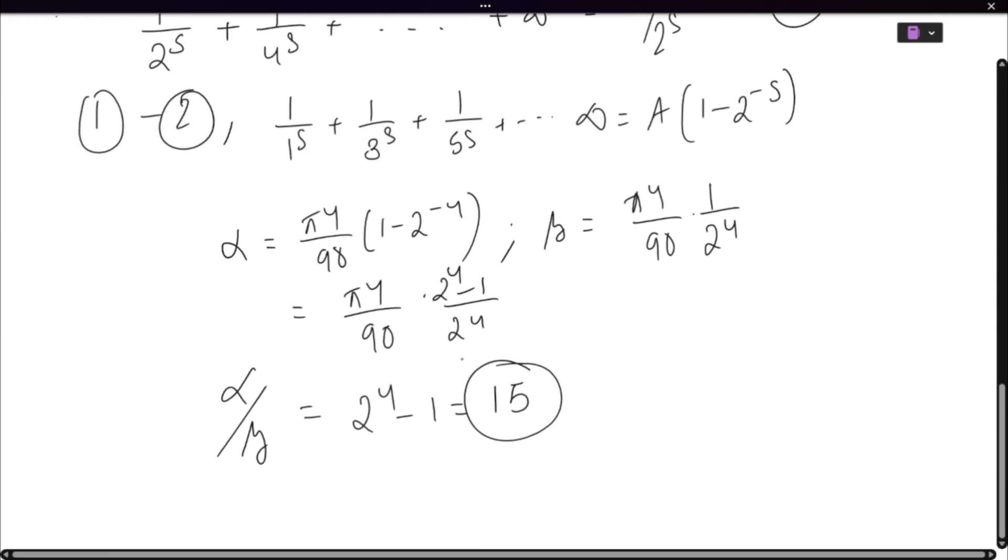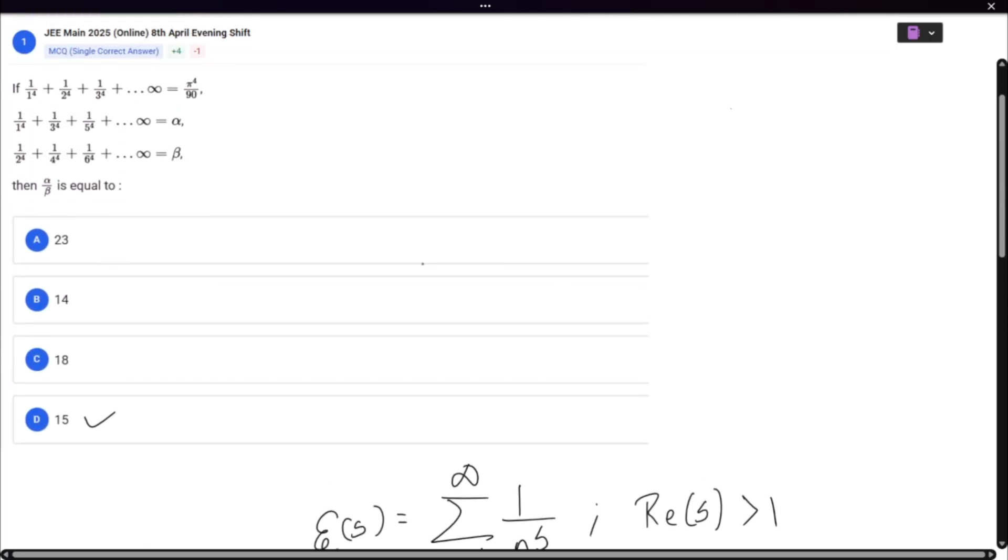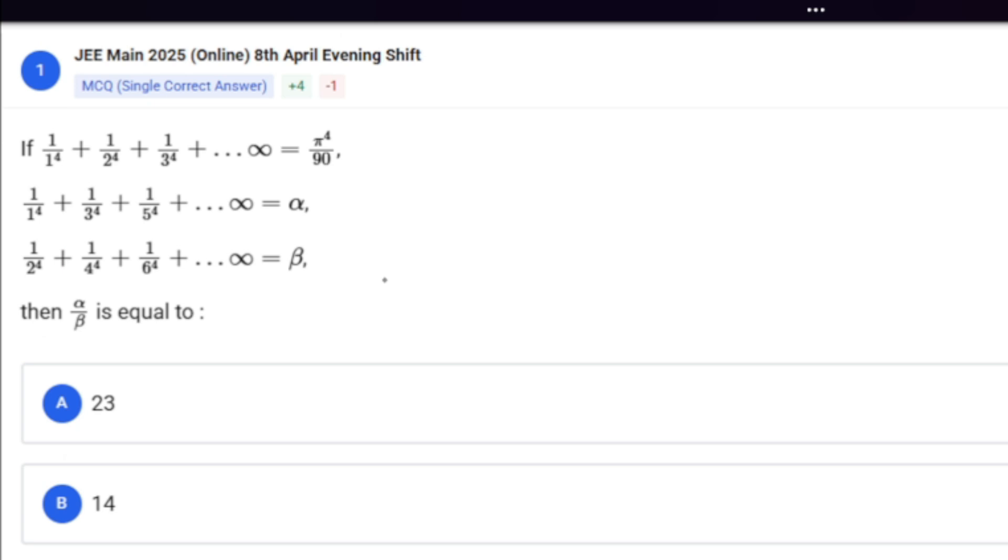So as you can see, we did not even need pi to the power 4 by 90 because that would ultimately cancel off. So a better version of this question which you can ask, where you will not mention the first series and they will only give the second and last series.